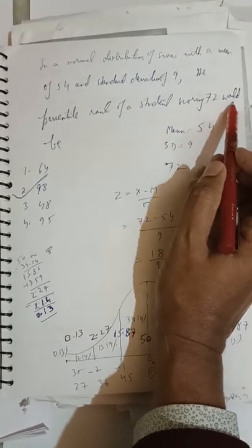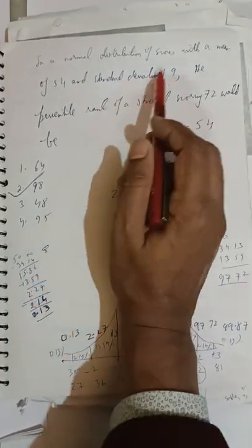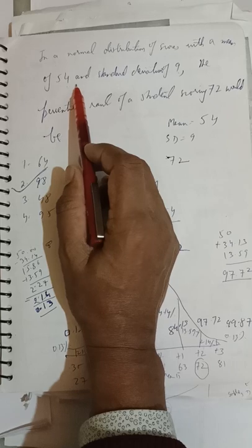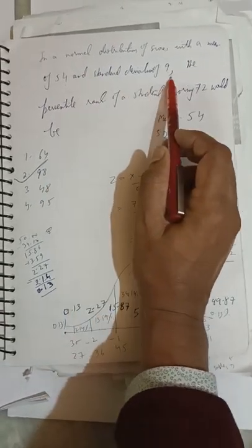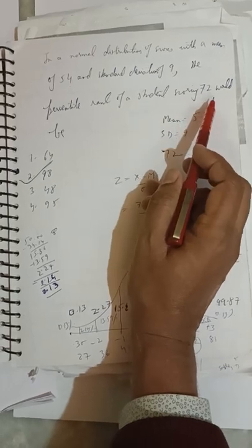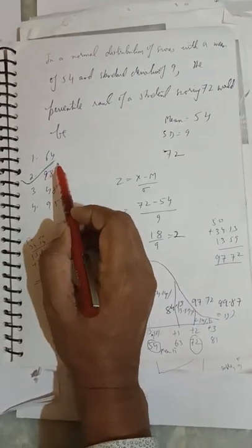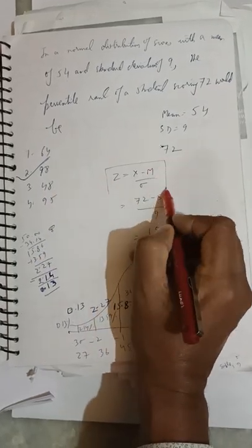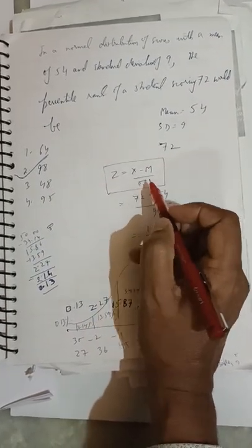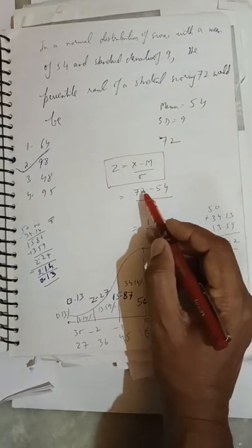...the percentile rank of a student scoring 72 would be: 64, 98, 88, or 95. Given: mean = 54, standard deviation = 9. We apply the same formula: z = (x - m) / sigma. Raw score is 72, so z = (72 - 54) / 9 = 18/9 = 2.